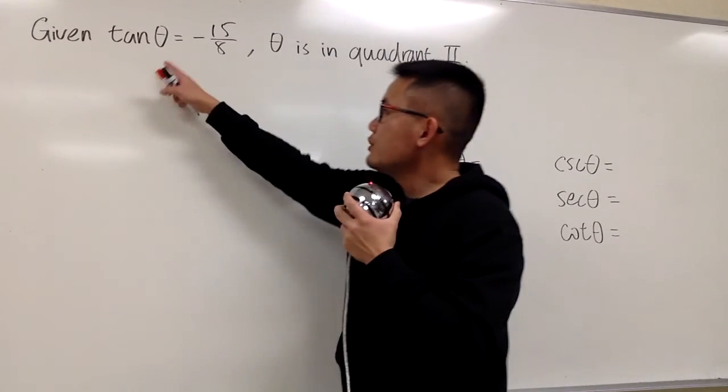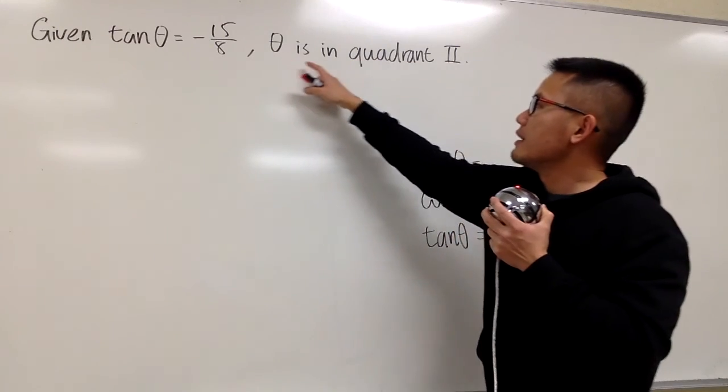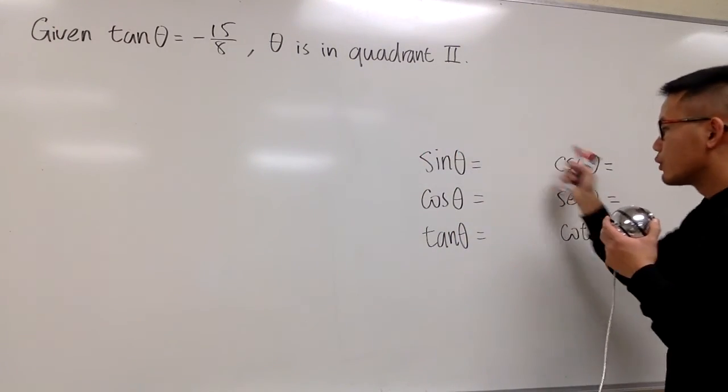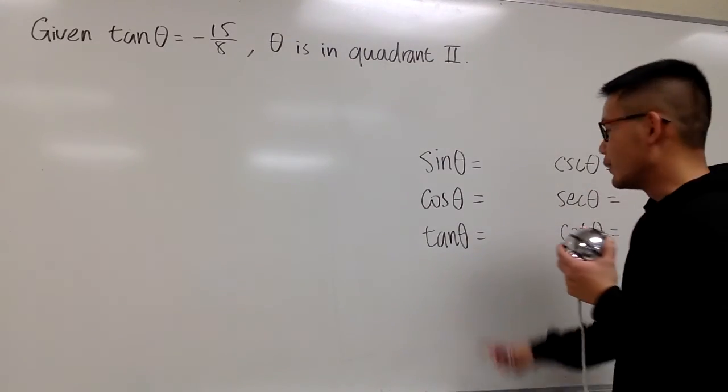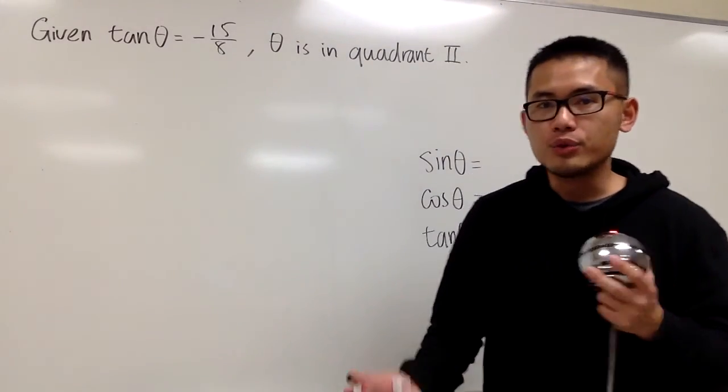Okay, we are given that tangent theta is equal to negative 15 over 8, and we know that theta is in the second quadrant. And based on this information, we are going to figure this out. Well, we know one answer already, but anyways, here is what I wanted to show you.